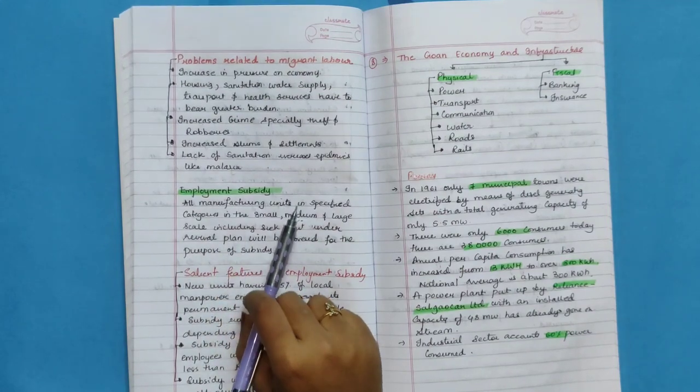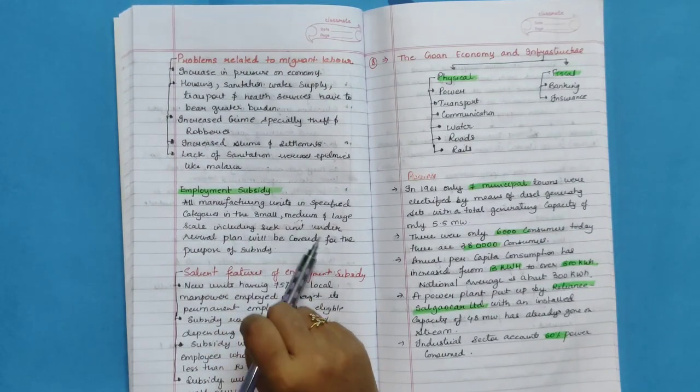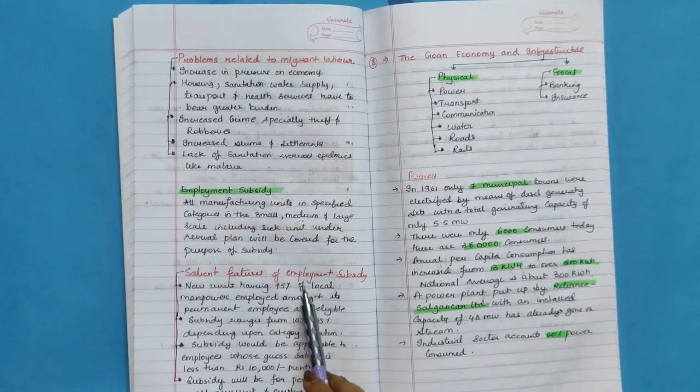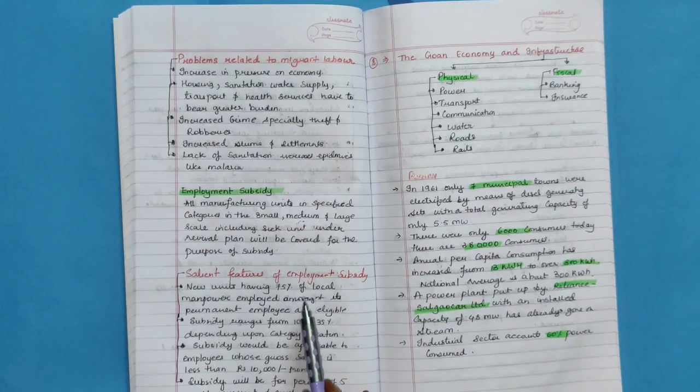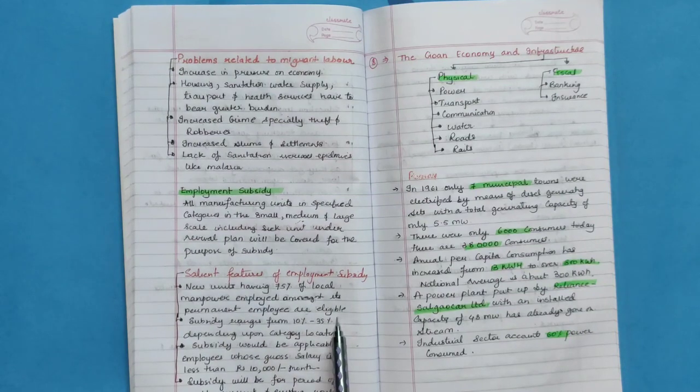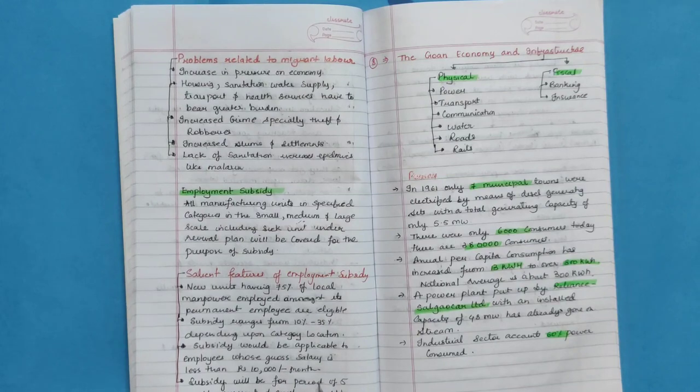Employment subsidy. All manufacturing units in specific categories in the small, medium and large scale including sick unit under revival plan will be covered for the purpose of subsidy. Salient features of employment subsidy: New units having 75% of local manpower employment amongst its permanent employee are eligible. Subsidy ranges from 10 to 35% depending upon category to location. Subsidy would be applicable to employees whose gross salary is less than Rs. 10,000 per month. Subsidy will be for a period of 5 years. New units and existing would be 2 to 4 years.